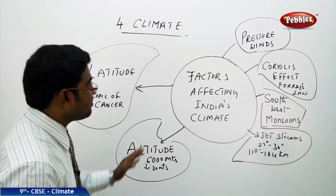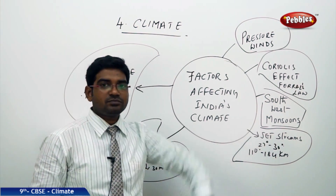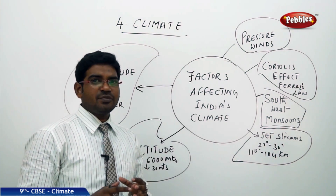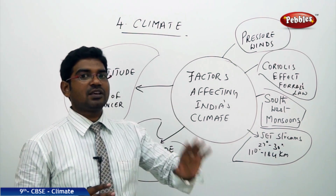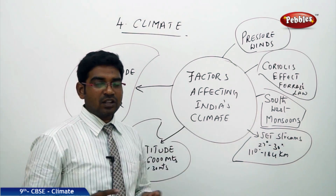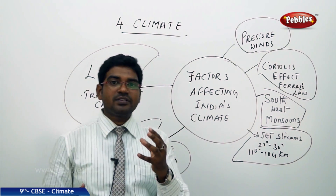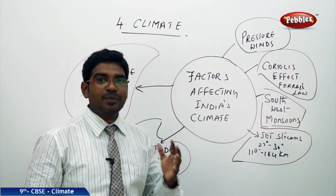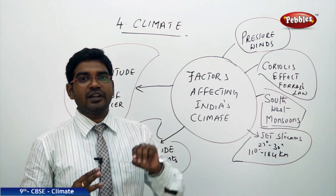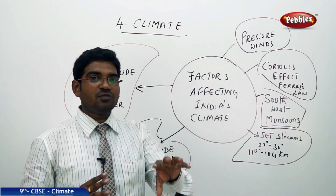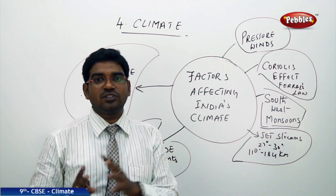The third important factor is pressure and winds. The pressure winds include upper circulating winds, surface winds, and circulating winds. These are winds which originate in local regions, pass through different areas, gather moisture, and influence land masses, producing different climatic effects.